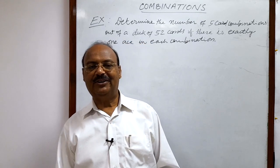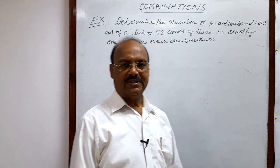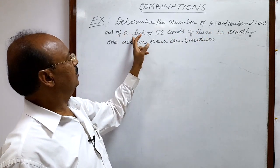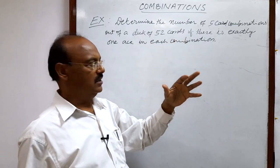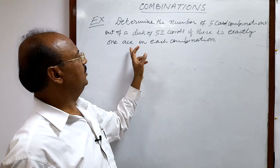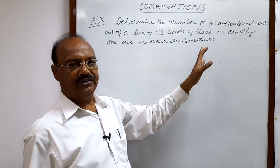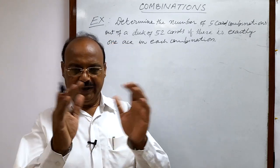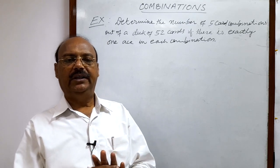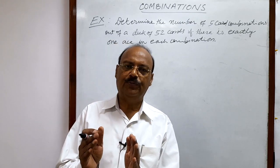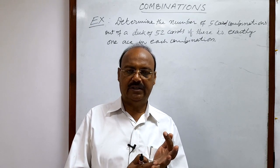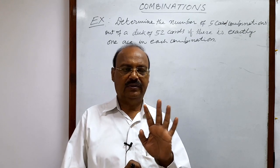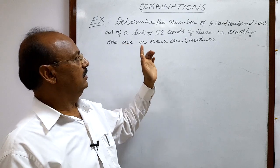Here we will discuss a question from the topic combinations. The question is: determine the number of five card combinations out of a deck of 52 playing cards if there is exactly one ace in each combination. There are four aces in a deck, one in each group — diamond, spade, club, and hearts.